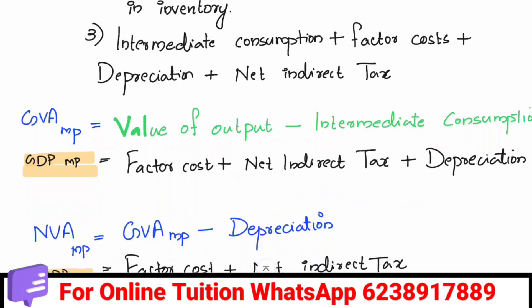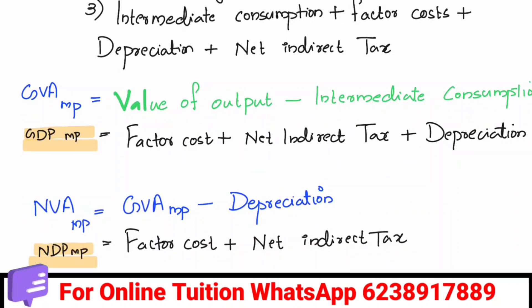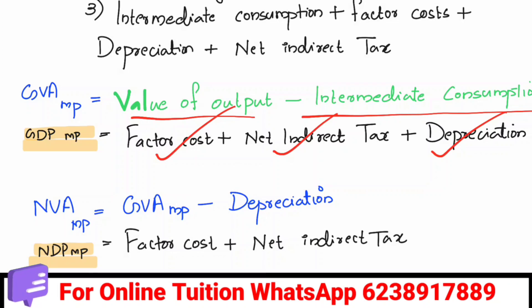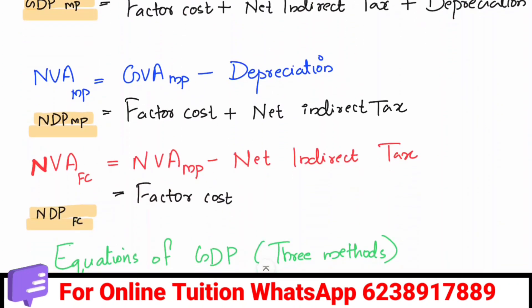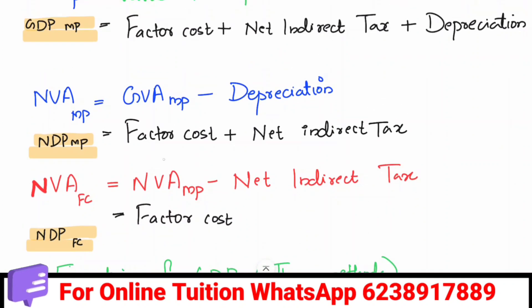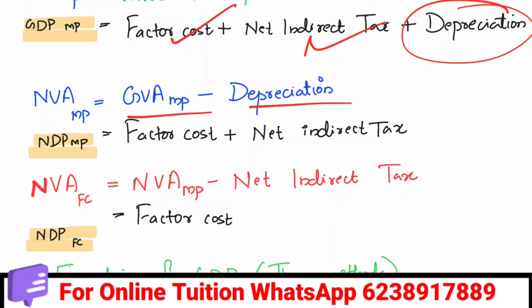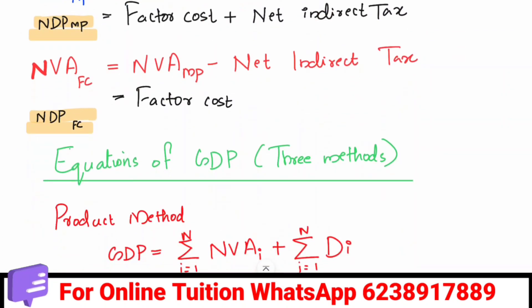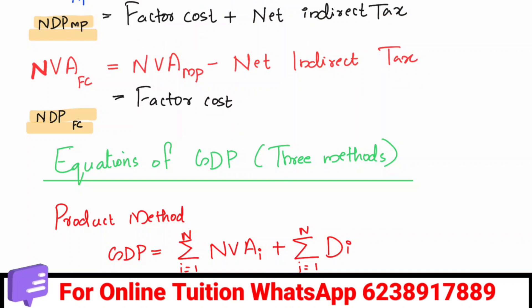The value of output: intermediate consumption, factor cost plus net indirect tax plus depreciation is called GVAMP. This GVAMP is called GDPMP. Then NVAMP — for NVAMP, the depreciation is subtracted from GVAMP. The factor cost plus NVAMP is called NDPMP.